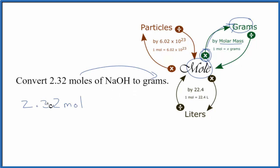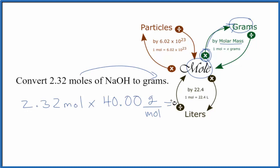So we're going to multiply 2.32 moles times that molar mass, which is 40.00 grams per mole. When we multiply, we have moles on top and moles on the bottom — they're going to cancel out. And that's how we know we're doing it right, because we're left with grams, and that is what we want.